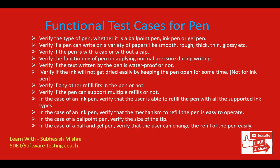Moving to functional test cases, we can cover different functionality. First, verify the type of the pen — there can be multiple different types, like ballpoint pen, ink pen, or gel pen — we should verify what type it is, as per the requirement. Then verify if the pen can write on a variety of papers like smooth, rough, thick, and thin. We should try whether we are able to write on those kinds of papers, or if it only works on smooth paper, for example. We should verify all those different kinds of papers.